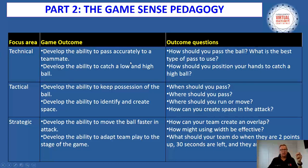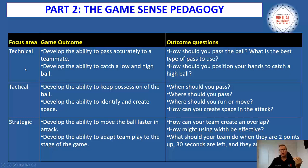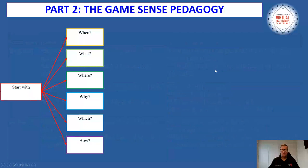If we look at how that all fits together — in terms of our skill focus areas, if one of our technical game outcomes was to develop the ability to pass accurately to a teammate, then our questions should be linked to that outcome. A good open-ended question would be something like, 'How should you pass the ball?' or 'What is the best type of pass to use?' You can pause and have a better look at that table, but the idea is to show a specific focus area or outcome, what we'd expect to see students develop, and then the questions we could use to match those outcomes.